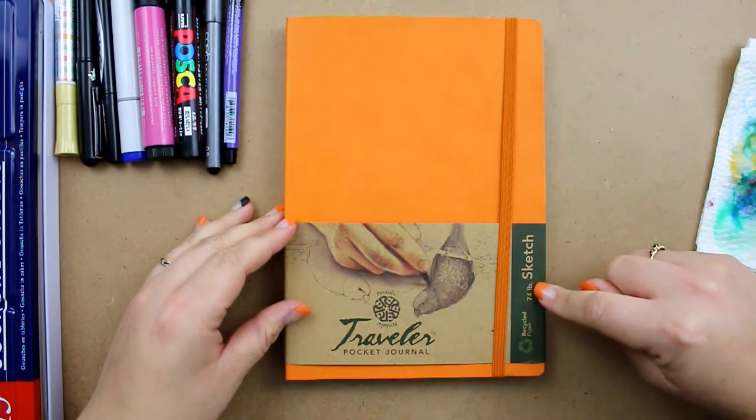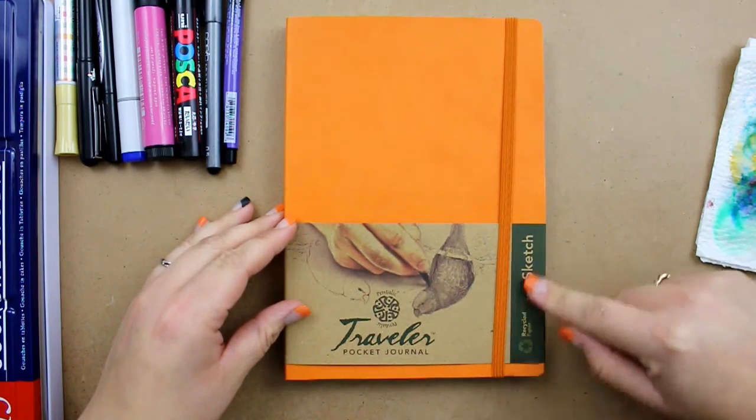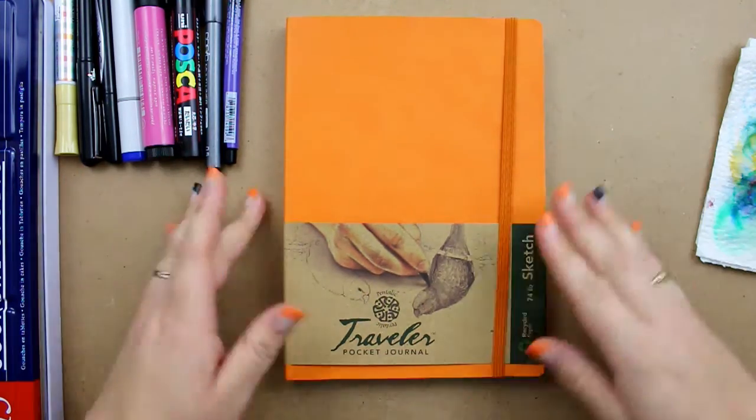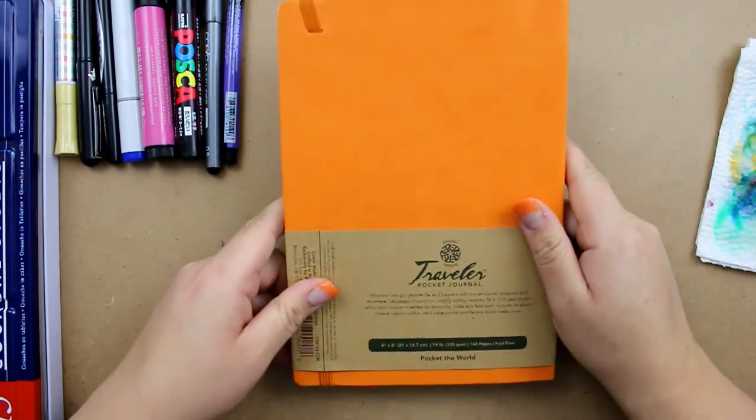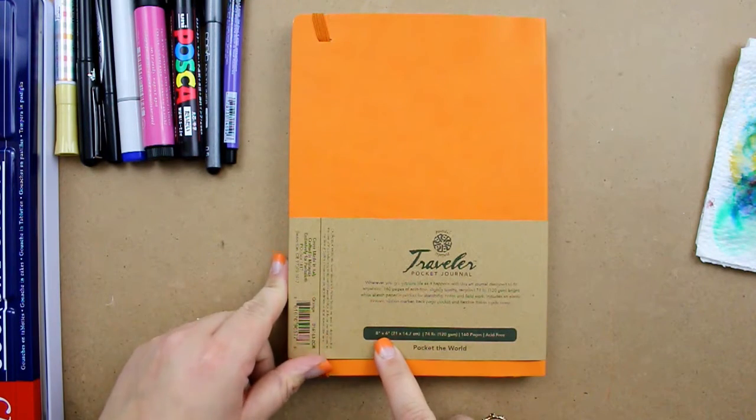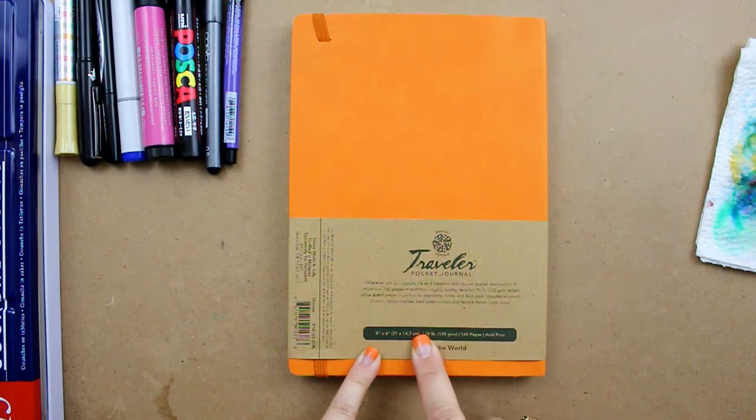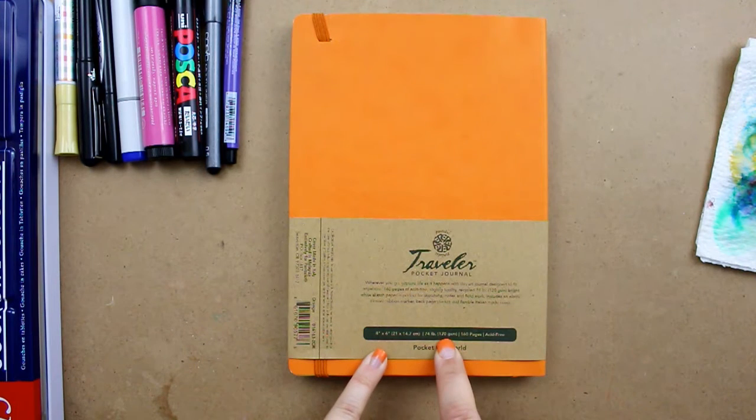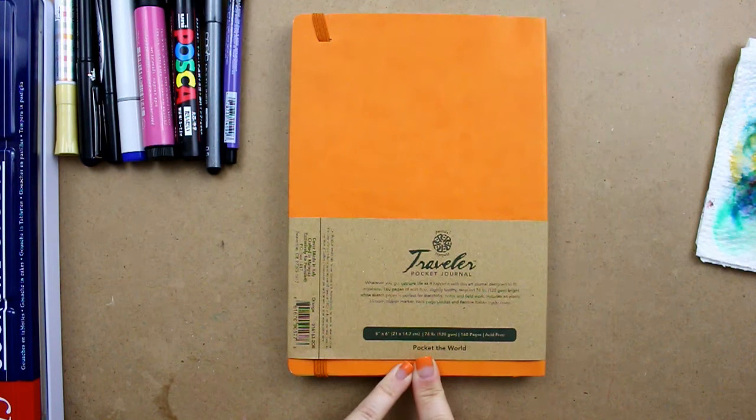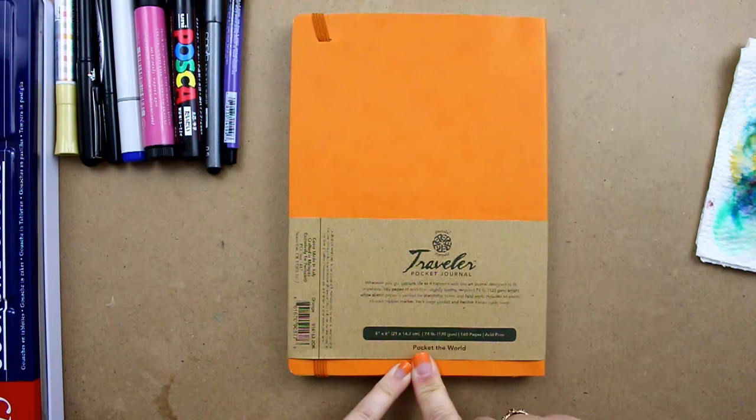So it has 74 pound sketch paper in there. It's recycled paper. It's 8 by 6 inches, 74 pounds, which is 120 GSM, 160 pages and it is acid-free.